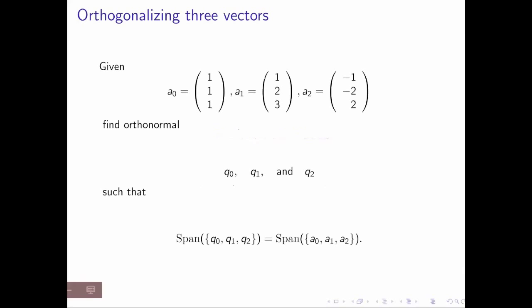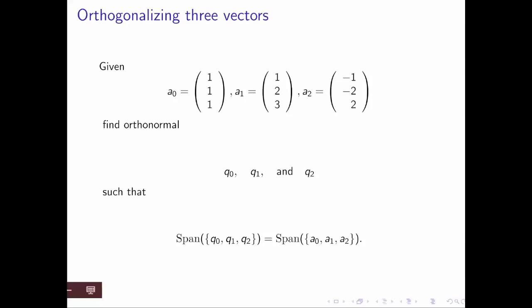So what about orthogonal bases or orthonormal bases? Here's the problem statement. Using the case where you have three vectors as an example, we start with three vectors. We would like to find three vectors, q0 through q2, such that the span of those three vectors is the same as the span of the three vectors with which we start. And how do we do that?